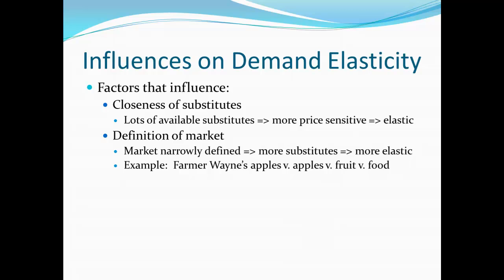We could define the market even more broadly and say all food. If we increase the price of food 10%, do people then buy substantially less food? Well, the only real substitute for food is a coffin. So odds are good we're going to buy almost exactly as much food as before. We might eat a little bit less, but we're not going to switch away from food entirely, and we probably won't even cut back very much. So as we took a very narrow market — just Farmer Wayne's apples — we're very sensitive to price changes because there are very close substitutes nearby. But as we broaden the market definition, people are much less sensitive to prices because there aren't very many good substitutes.